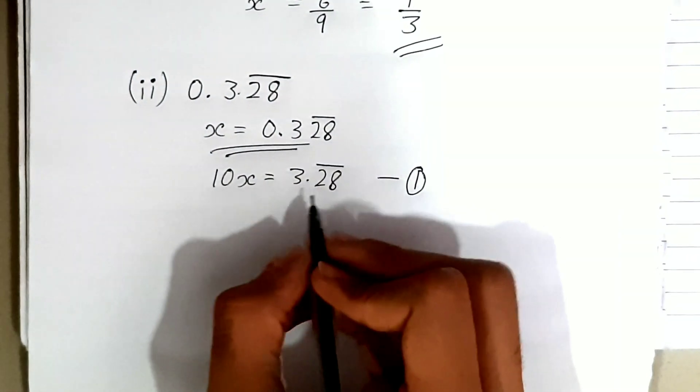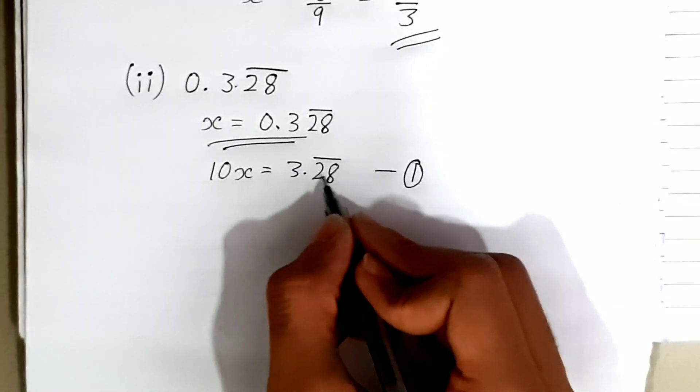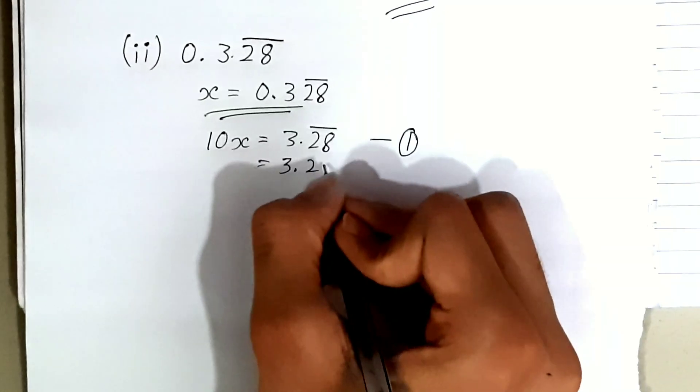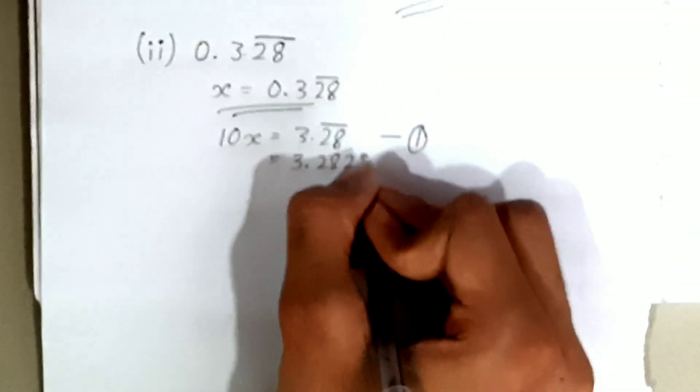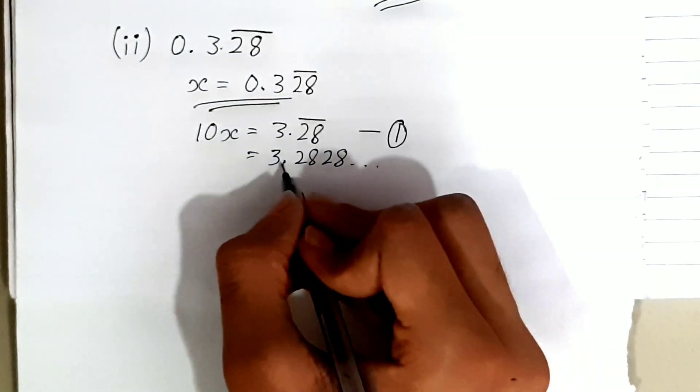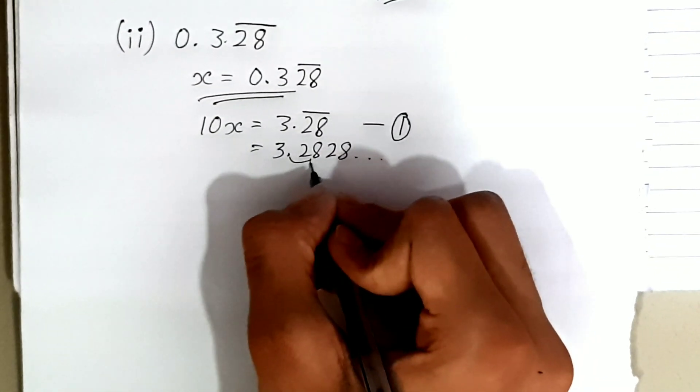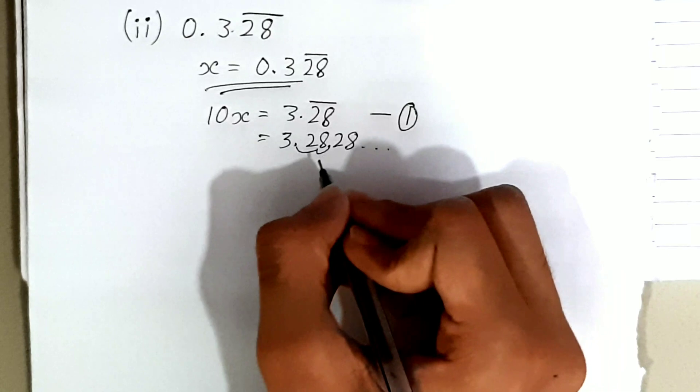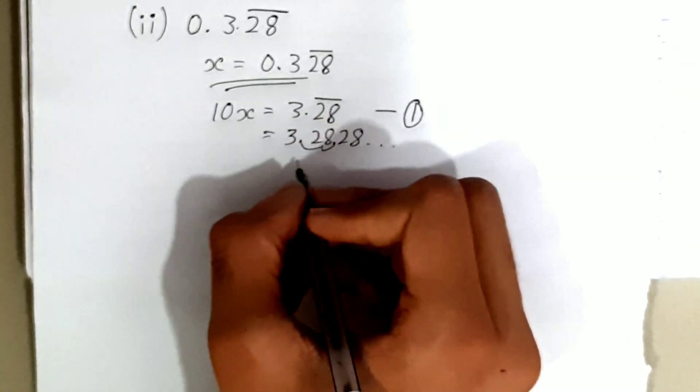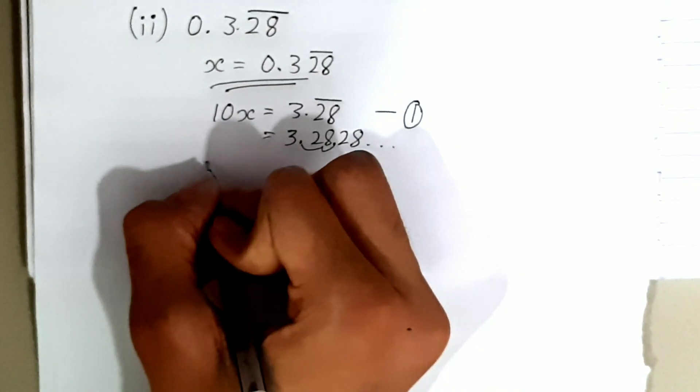We need to shift the point two more places to follow the same repeating pattern. We can write 3.2̄8̄ as 3.282828... To shift it two more places, we multiply by 100, giving us 1000x = 328.2̄8̄.